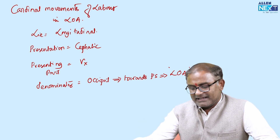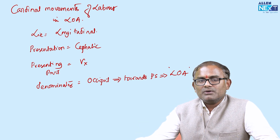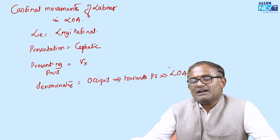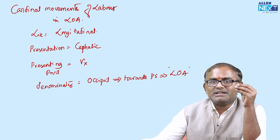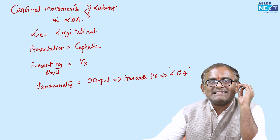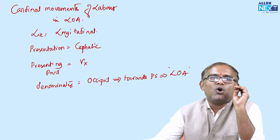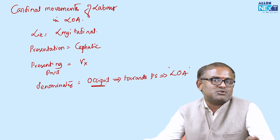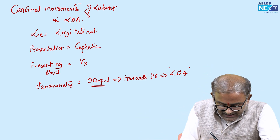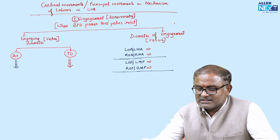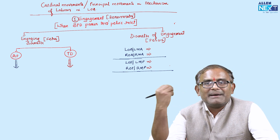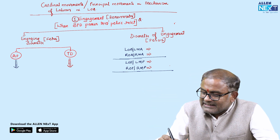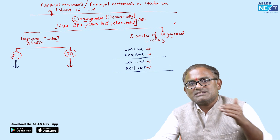Now I am going to explain the cardinal movements. The first cardinal movement is engagement. Whenever you are talking about cardinal movements, you should always take the denominator as a landmark. Here the denominator is the occiput. Engagement is when the biparietal diameter passes through the pelvic inlet.